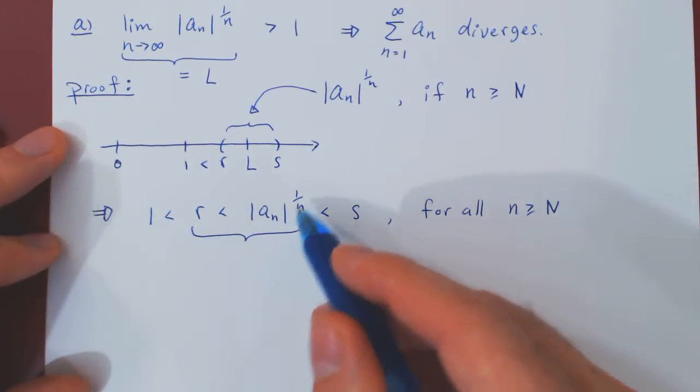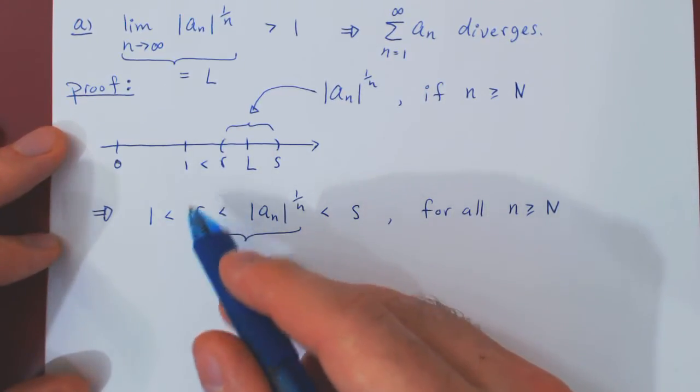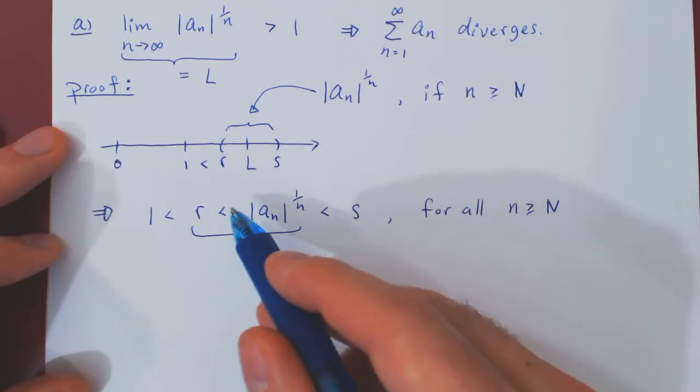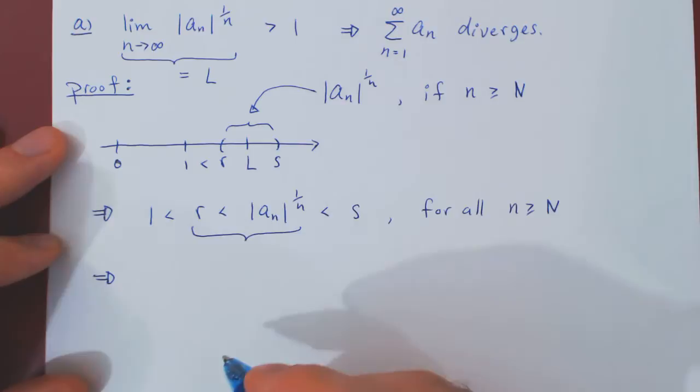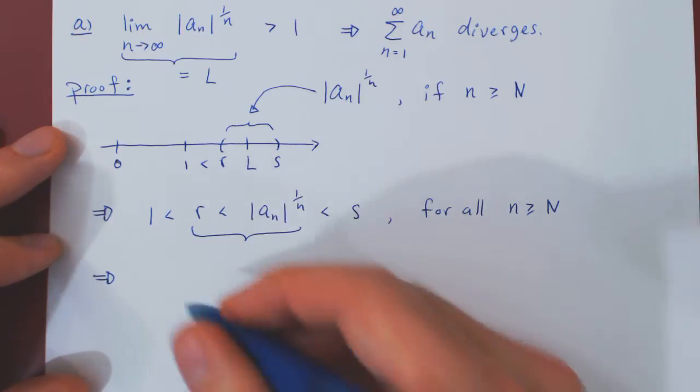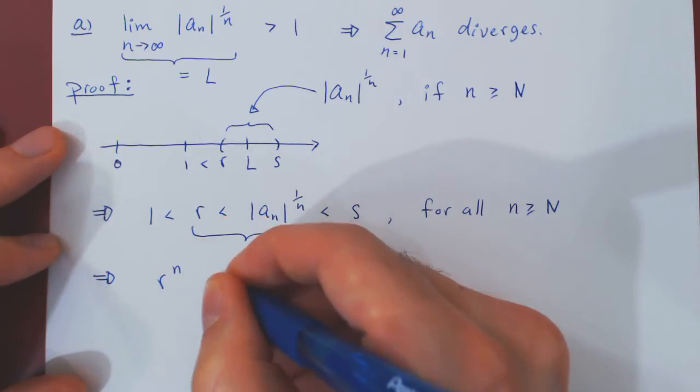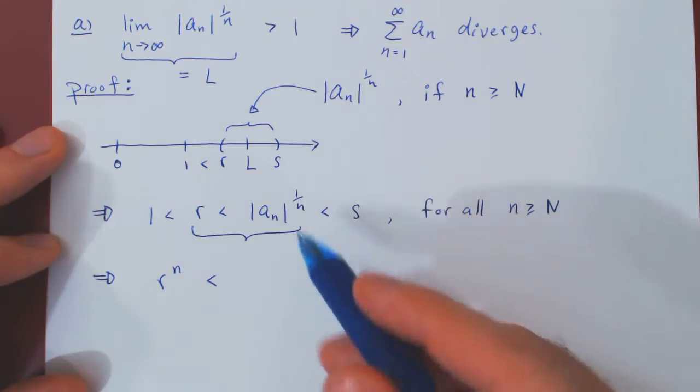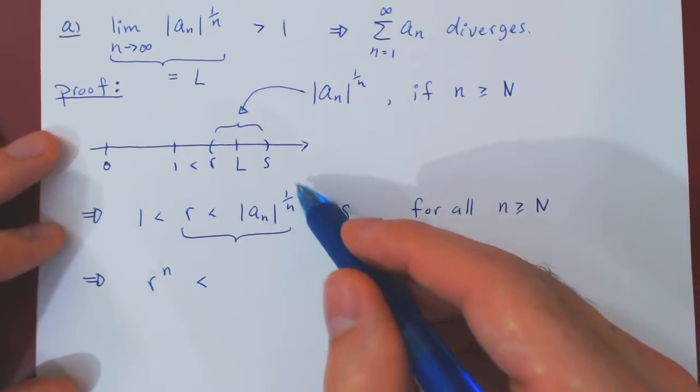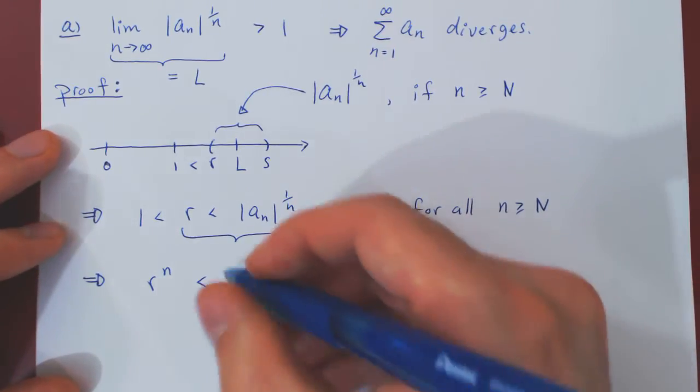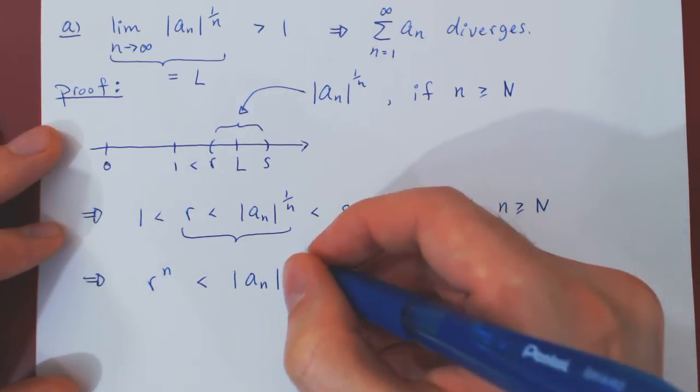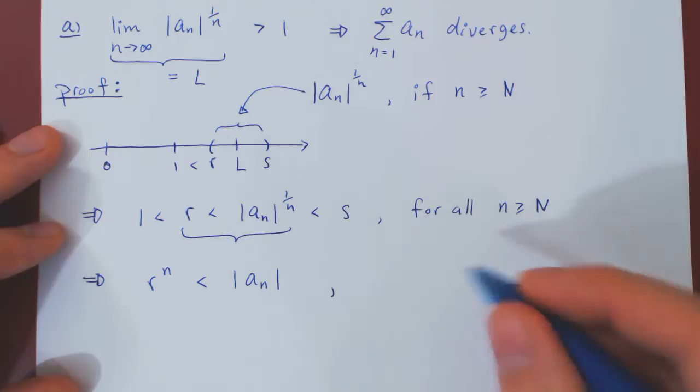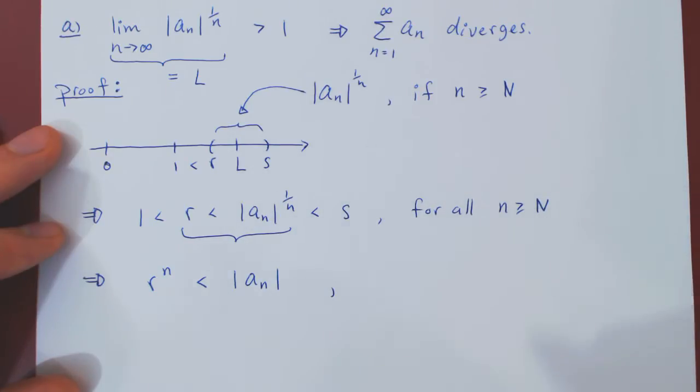So if R is less than this expression, we can take the nth power on both sides, which will preserve the inequality. Which means we're going to have R to the n is strictly less than, if you take the nth power of an nth root this will cancel, and we'll be left with a_n in absolute value.